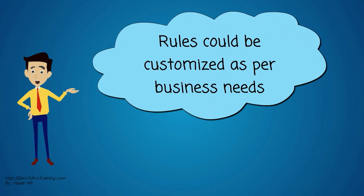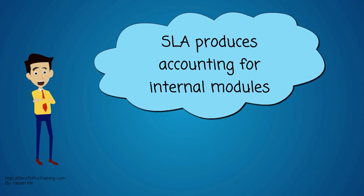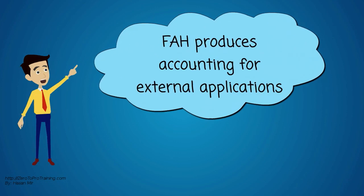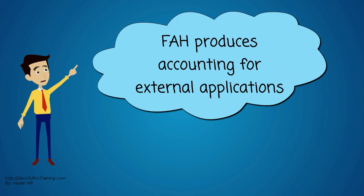Similar to SLA, the rules based on which the accounting is produced could be customized as per business needs. The main difference between SLA and FAH is that the former produces accounting for Oracle E Business Suite's internal modules, while the latter produces accounting for external applications.